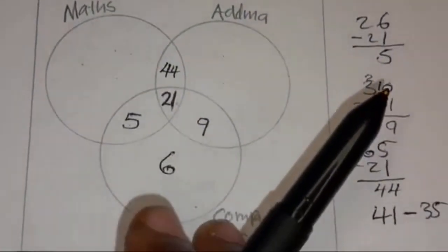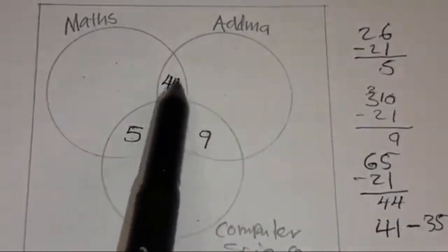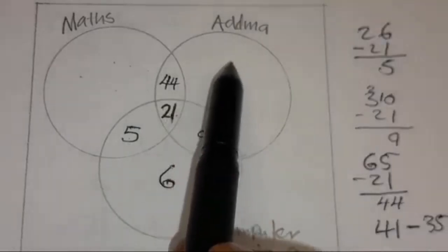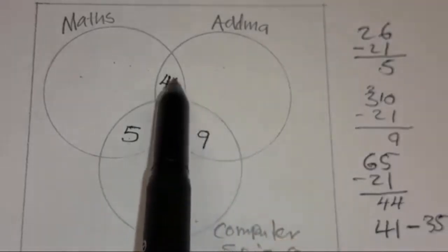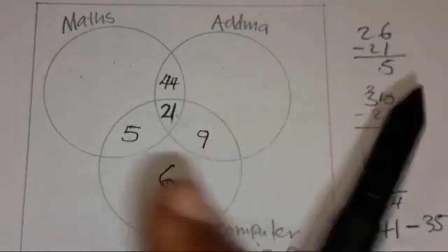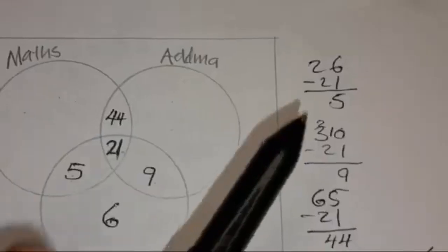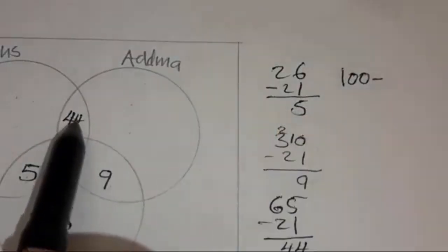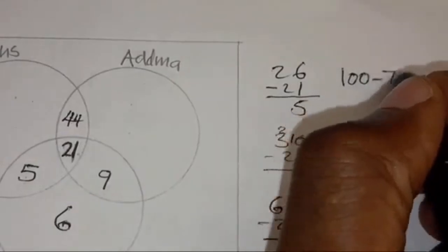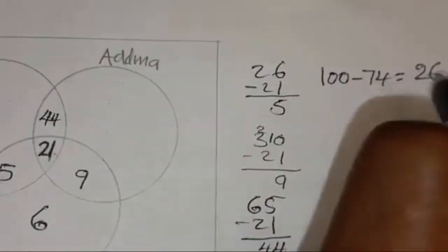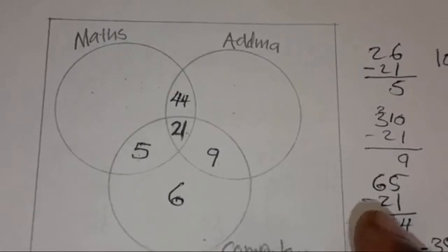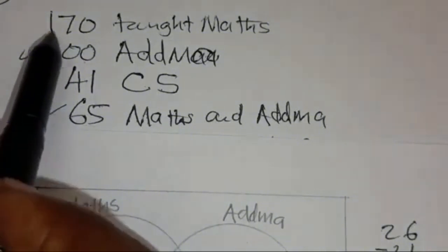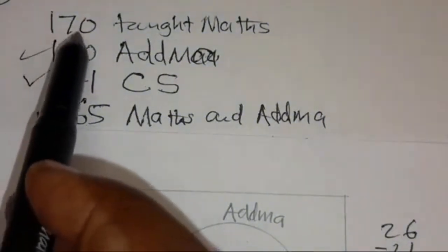100 teachers taught ADMA. Set ADMA is here. To find the number that taught ADMA only, we add the intersection values 9 plus 21 plus 44, which is 74, then subtract from 100: 100 minus 74 equals 26. So 26 teachers taught ADMA only.